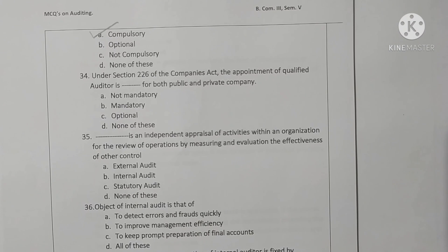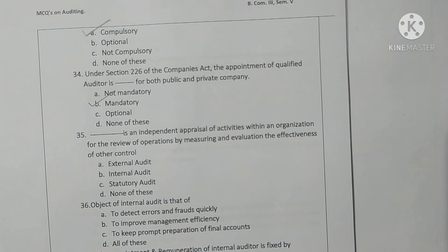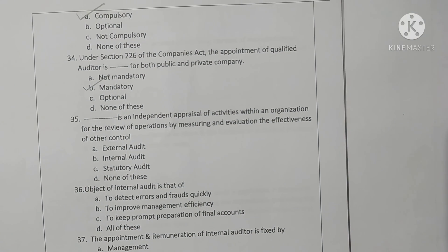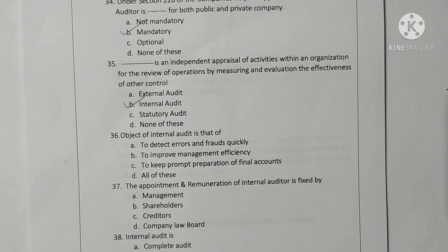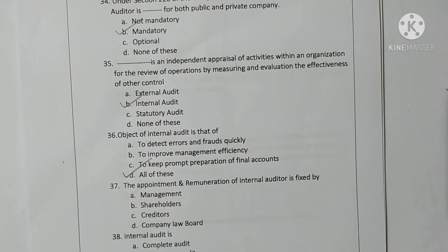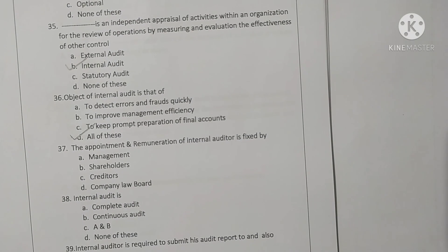Question 34: Under section 226 of the Companies Act, the appointment of a qualified auditor is mandatory for both public and private companies — option B is correct. Internal audit is an independent appraisal of activities within an organization for review of operations by measuring and evaluating the effectiveness of internal control — option B is correct. The object of internal audit is to detect errors and frauds quickly, improve management efficiency, and keep prompt preparation of final accounts — all of these, option D is correct. The appointment and remuneration of an internal auditor is fixed by management — option A is correct.